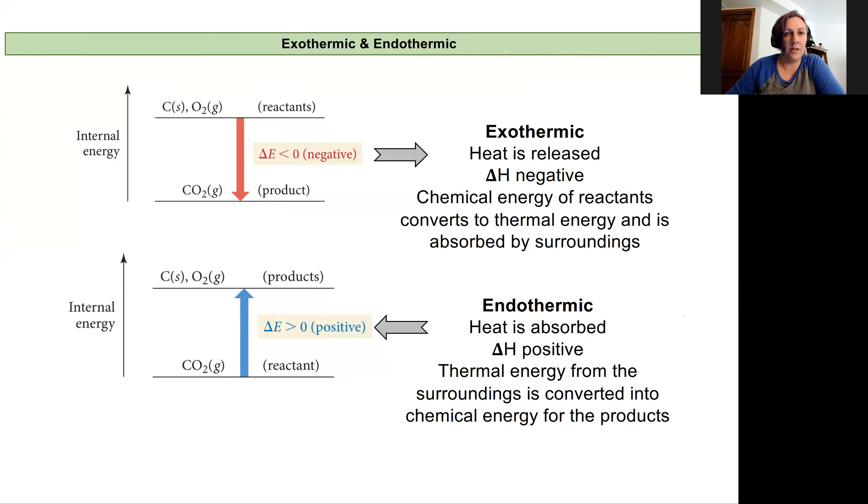Another key concept that we raised earlier in the quarter in 161 is the concept of exothermic versus endothermic. This is looking at the change in internal energy of a chemical reaction and comparing that energy of the reactants to the energy of the products. And if our reactants are higher in energy and they form something lower in energy, they're forming a more stable compound or series of compounds in that product state.